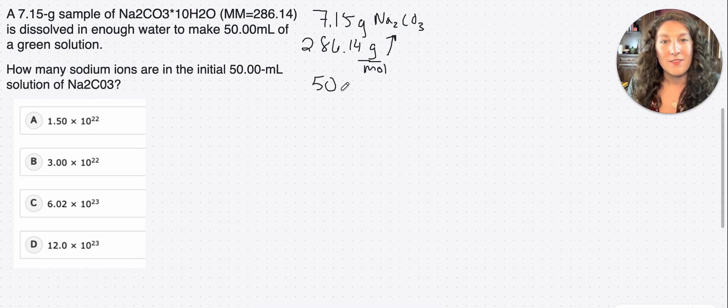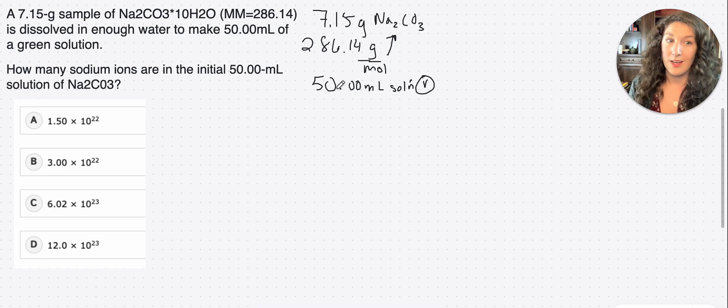All right, and they also gave us 50.00 milliliters in our solution, right? Which is our volume. Okay, and then what are they asking for? They're asking out of this initial 50 milliliter solution of Na2CO3, how many sodium ions are there? Okay, so we're looking for sodium ions.